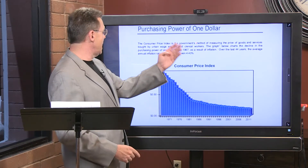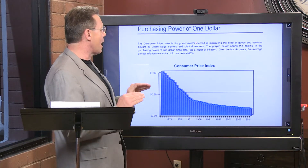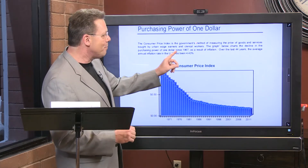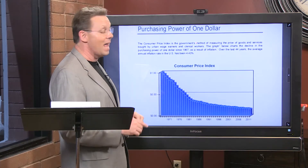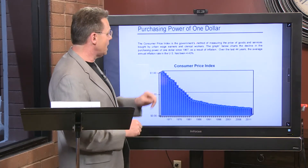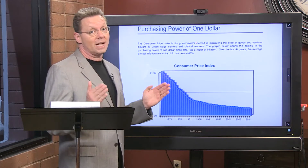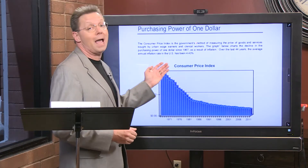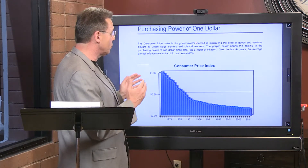Now let's look at the Consumer Price Index. The CPI is the government's method of measuring the price of goods and services bought by urban wage earners and clerical workers. This chart tracks the decline in the purchasing power of one dollar since 1967. Over the last 44 years, the average inflation rate in the U.S. has been 4.43%, though it's been almost flat in the last five or six years since the recession.